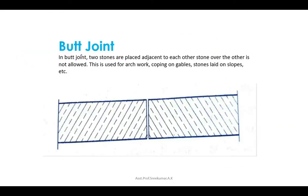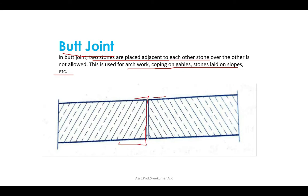The first type is the butt joint, the most commonly used joint in stone masonry. Two stones are placed adjacent to each other with their dressed edges side by side. This type is used for archwork, coping on gables, stone laid on slopes, etc.